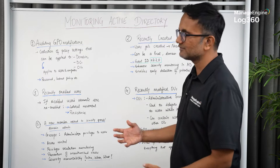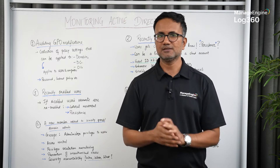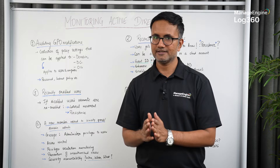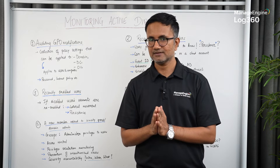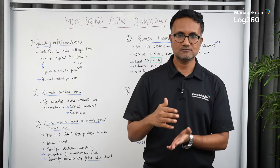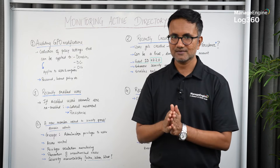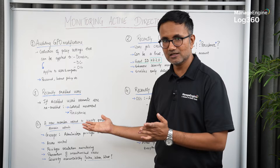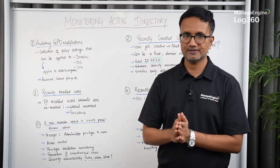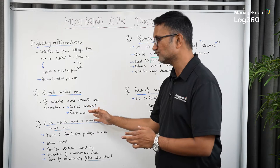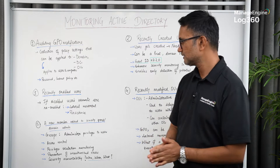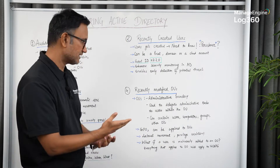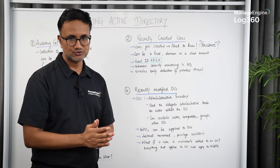The third thing is recently enabled users. Consider a situation where a particular user has left the organization — their account gets disabled. But what if an attacker gets into Active Directory and enables that account? You've got to know about it. This could be indicative of lateral movement, or similar to recently created users, it could be persistence. You've got to monitor recently enabled users.